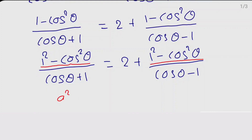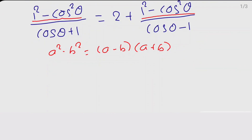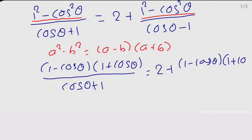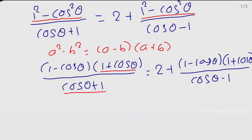Here we have 1² minus cos²θ on both sides. These are in the form of a² minus b², and the expansion is (a - b)(a + b). So expanding: we get (1 - cos θ)(1 + cos θ) on the LHS, divided by cos θ plus 1. On the RHS: 2 plus (1 - cos θ)(1 + cos θ) divided by cos θ minus 1. Here, 1 + cos θ and cos θ + 1 are the same, so they cancel.